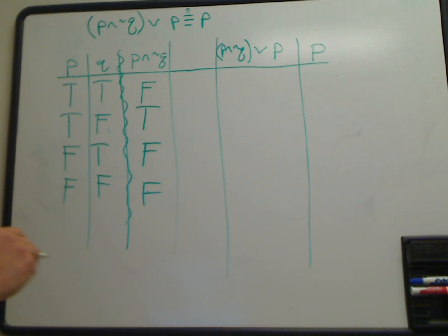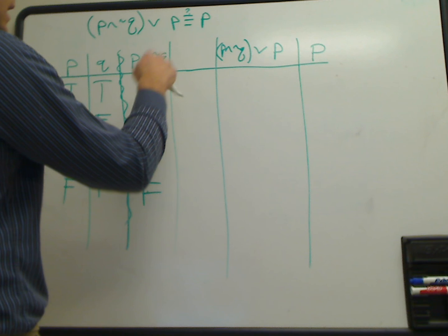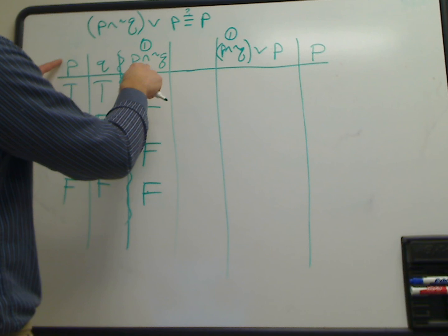So to fill out our second-to-the-right column, we take this element, which we'll call number one, and we OR it with P. So we take the column on the far left side and OR that with column one here.